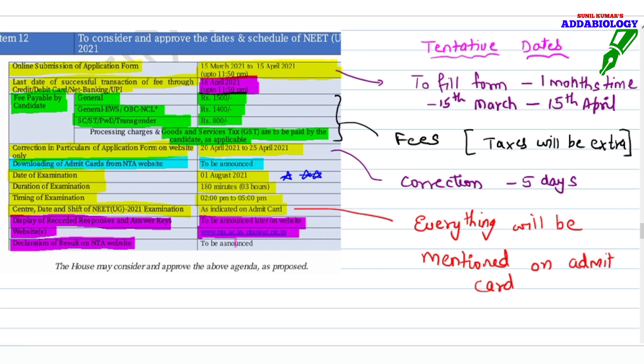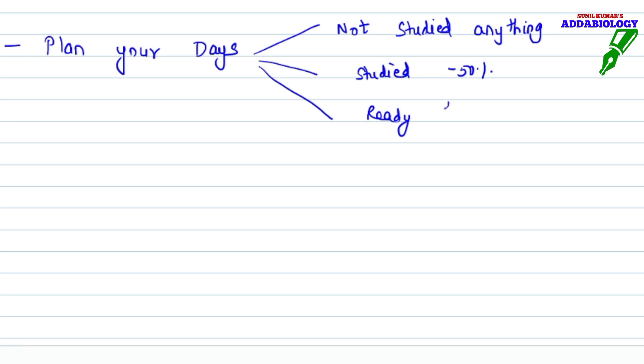These are tentative dates. You need to study hard. This is high time now. Start studying. Most important is you have to plan your days. You know better where exactly you stand. If you have not studied anything, still there is an opportunity. If you have studied 50% of the syllabus, there is more chance. If you are ready for revision and tests, there is an excellent chance.